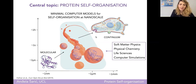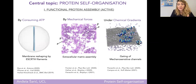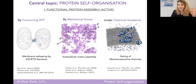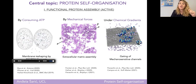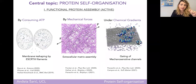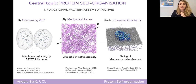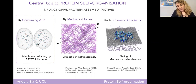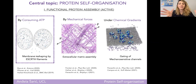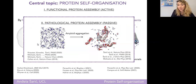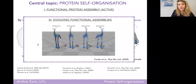In the cell, there are three main sources of non-equilibrium driving forces: consumption of energy-rich molecules like ATP and GTP, mechanical forces, and gradients in chemical species. Today I'll focus on ATP consumption in membrane reshaping, which will be the main part of my talk. Then I'll speak about pathological assembly involved in Alzheimer's disease. Finally, I'll finish with a brief overview of our recent efforts to evolve functional structures in silico.